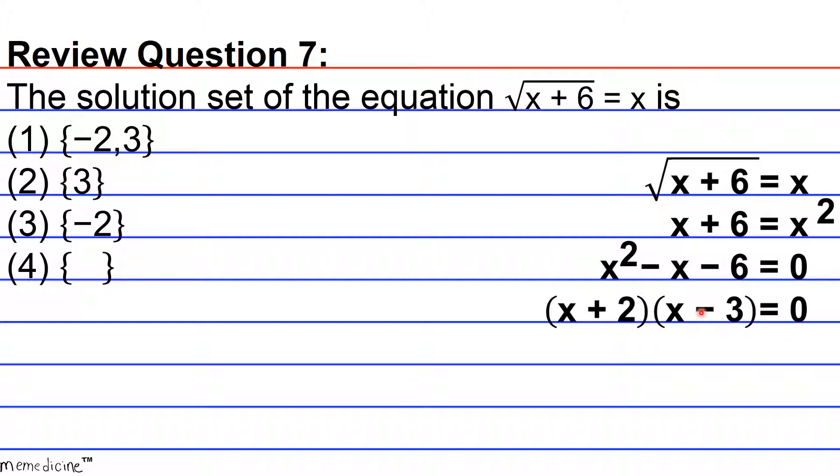The zero product property says that one of two factors or both have to be equivalent to 0 in order to yield 0. So by setting both factors to 0 separately we wind up with x plus 2 equals 0 and x minus 3 equals 0, or x is equivalent to negative 2 or x is equal to 3.